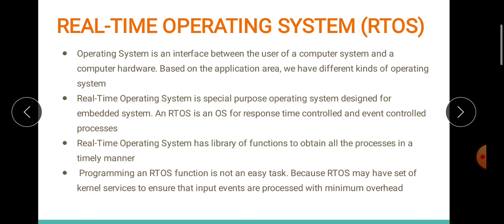Here the waiter acts as the operating system — who acts as an interface between the customer and the food area. That's what an operating system does: it acts as the interface between the customer, who is the user, and the computer hardware. So an operating system is simply the interface between the user of a computer system and the computer hardware. I hope the concept about operating system is clear — keep that in mind, as it is a very basic concept we need throughout this module.